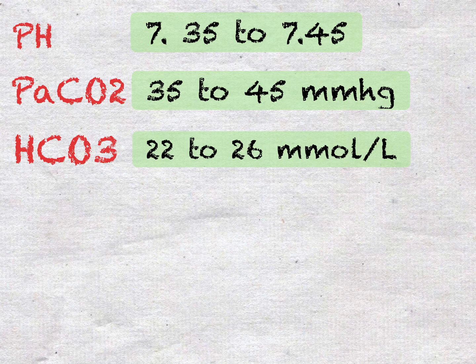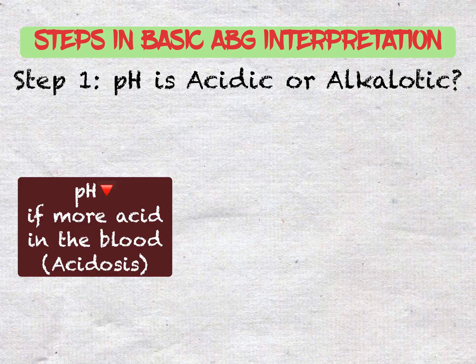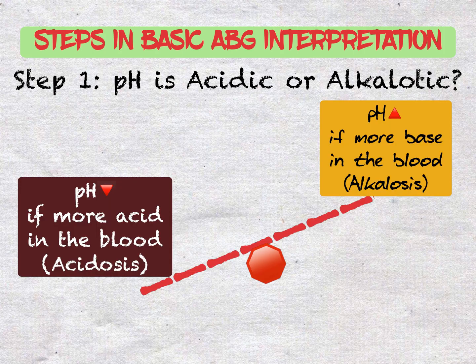Once you have memorized those values, there are only three steps needed in basic ABG interpretation. The first step is to examine the pH — is it acidotic or alkalotic? The lower the number, the more acidotic the patient is; alkalosis is the opposite. The higher the pH, the more base is in the blood. Once you've determined whether there is too much acid or too much base, you can move on to identify what causes this imbalance, as our body keeps acid-base balance to function well.